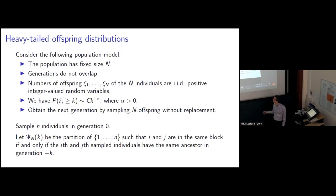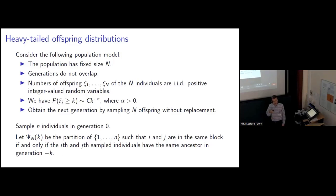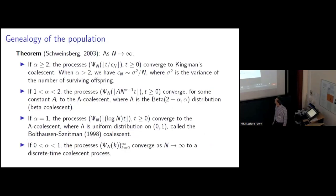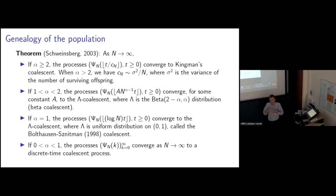This is an example of a Cannings model, so we can take a sample of n individuals from generation zero and define the ancestral processes as before. We want to take the population size to infinity and consider the limiting ancestral processes. Here is the theorem describing the limiting behavior. When alpha is greater than or equal to 2, large families are sufficiently rare that the genealogy converges to Kingman's coalescence. However, when alpha is between 1 and 2, the offspring distribution has heavier tails, we do see some very large families, and the genealogy of the population converges to the beta coalescence.